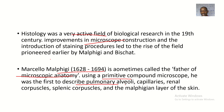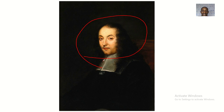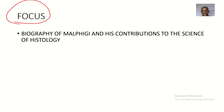To recap: Malpighi described pulmonary alveoli, capillaries, renal corpuscles, splenic corpuscles, and the Malpighian layer of the skin. He also discovered the structure of the lungs and circulation of blood through tiny capillaries, and concluded that man and almost all other animals are produced from eggs. That's our note on this Italian scientist and his discoveries in histology.